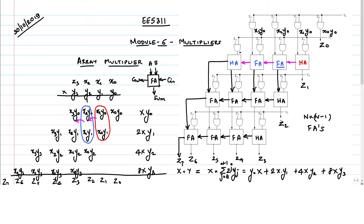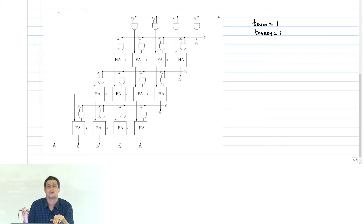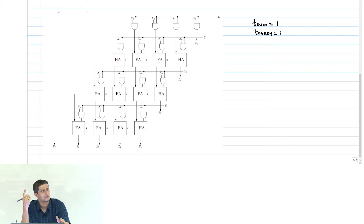Now let us do a timing analysis on this and see what happens. For simplicity, I am going to assume the following: T_sum equal to 1, T_carry also equal to 1. I showed you a circuit where this can be achieved — equal delay for carry and sum.